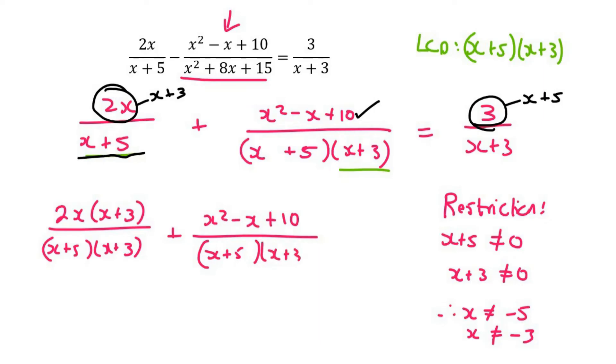x plus 5, x plus 3 equals to 3 multiplied by x plus 5 and then over the denominator of x plus 3 and x plus 5.